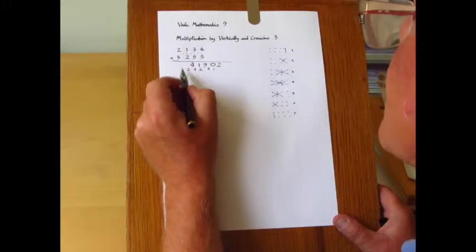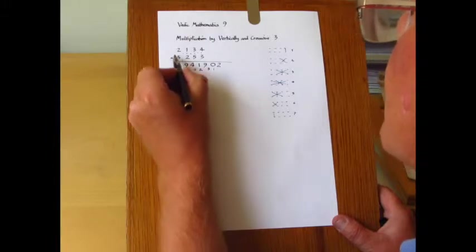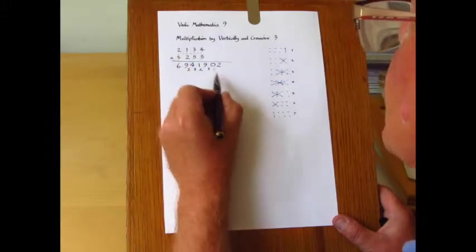Place the dot here. Four. Add three makes seven. Add in the carry two makes nine. And the last step two times three is six. And that's the answer.